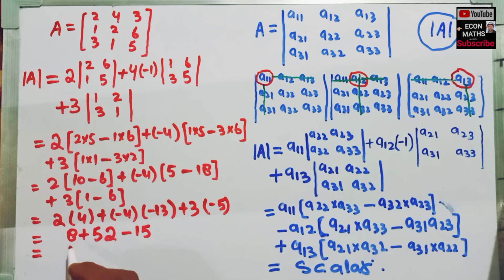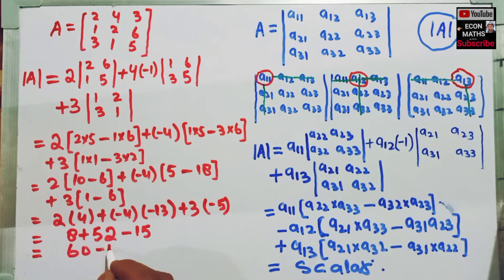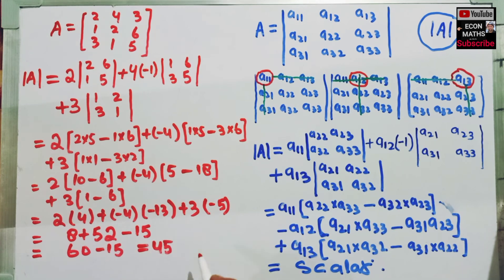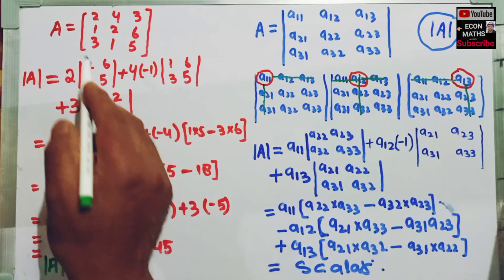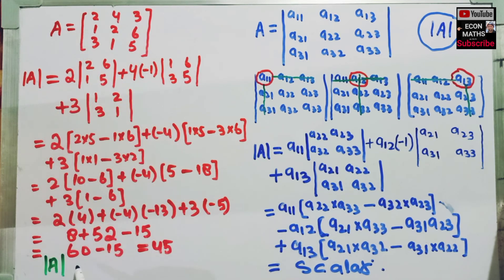Now, 8 plus 52 is 60, minus 15, this will become 45. The determinant of this matrix is equal to 45.